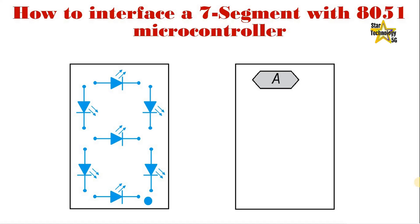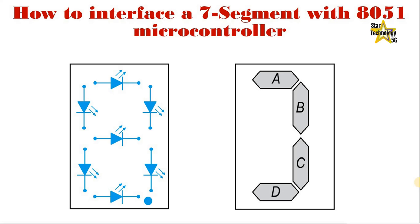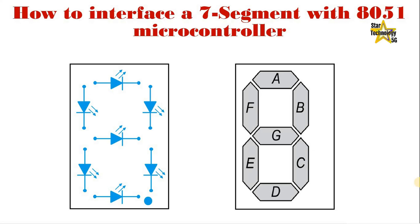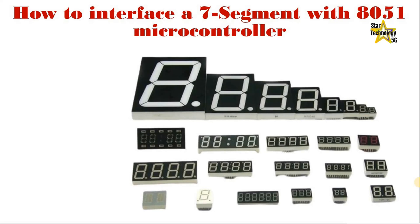The segments are named: Segment A, Segment B, Segment C, Segment D, Segment E, Segment F, Segment G, and Segment DP. 7-segment displays are available in different colors, shapes, and sizes.